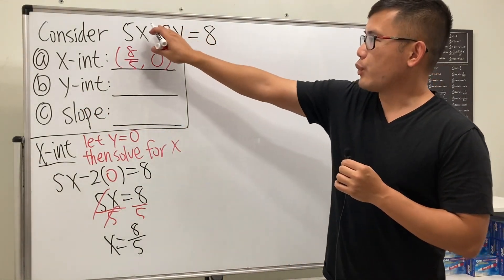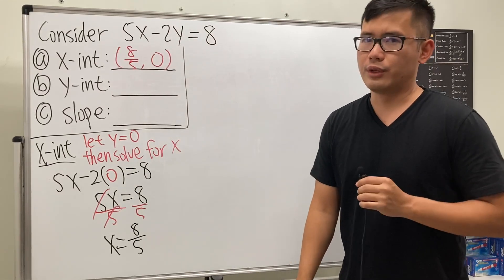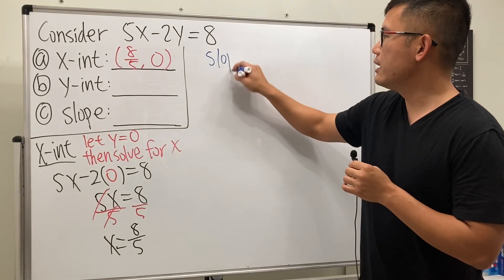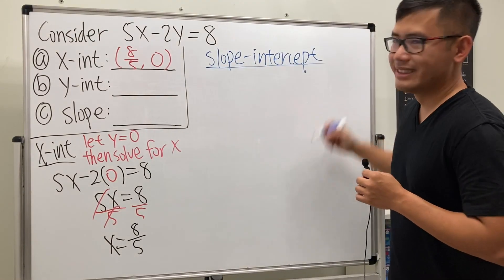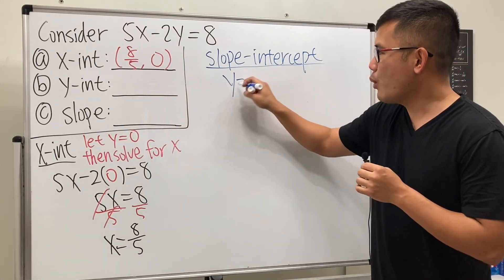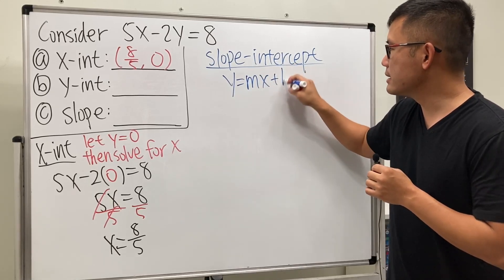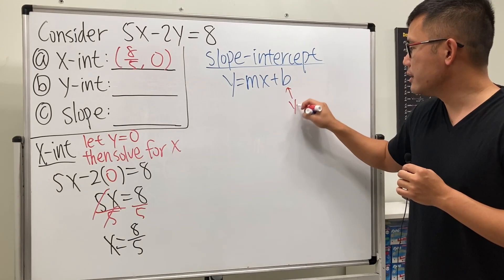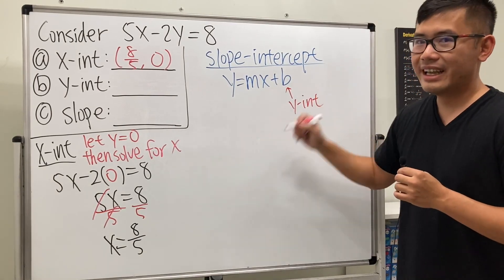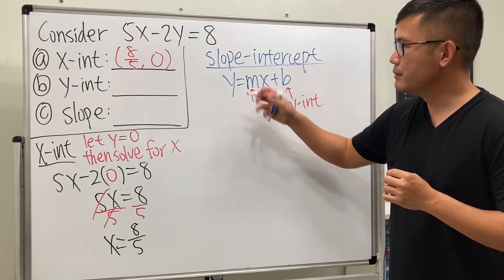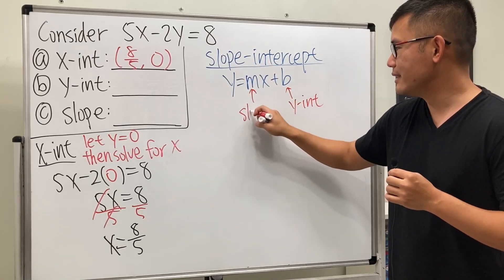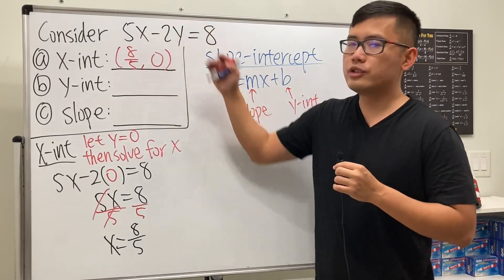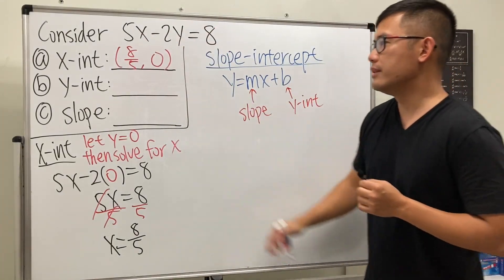This equation is in standard form, but what we really want is slope-intercept form: y = mx + b. The b is the intercept—more precisely, the y-intercept—and m is the slope.